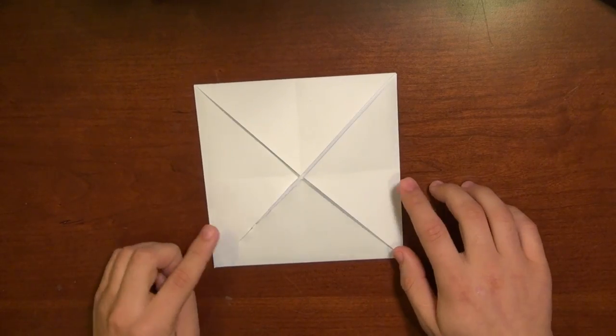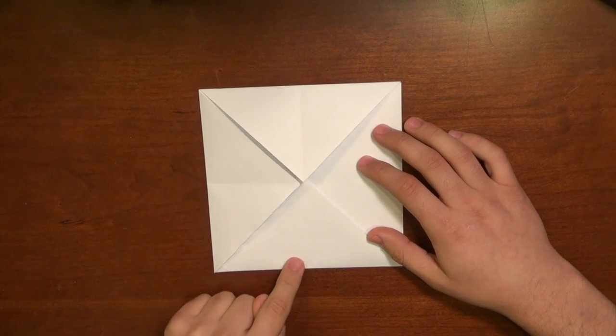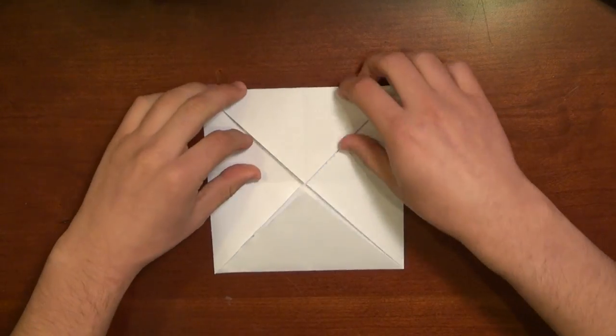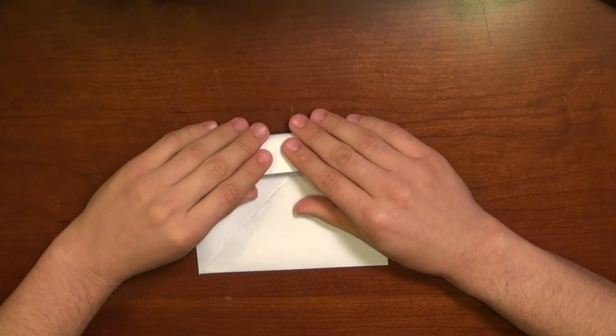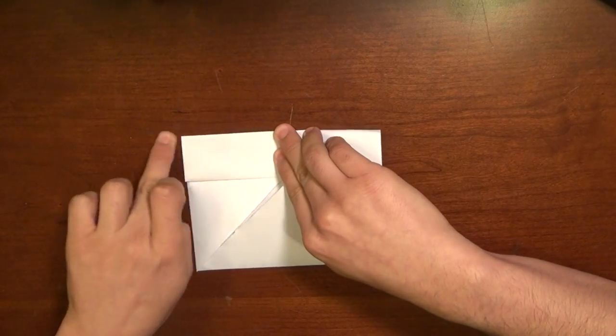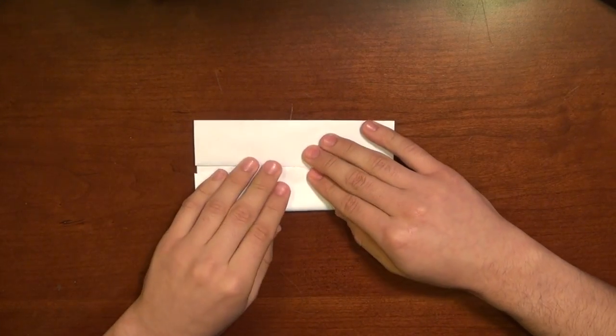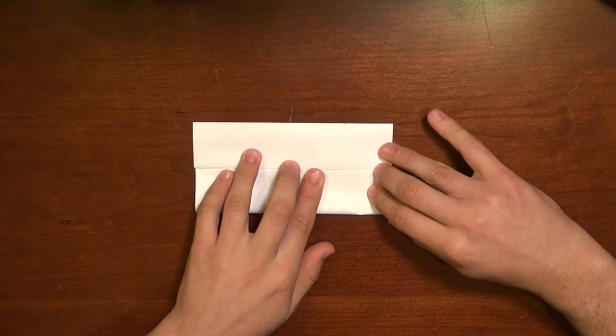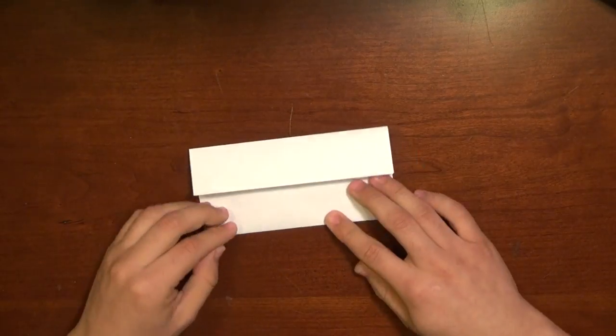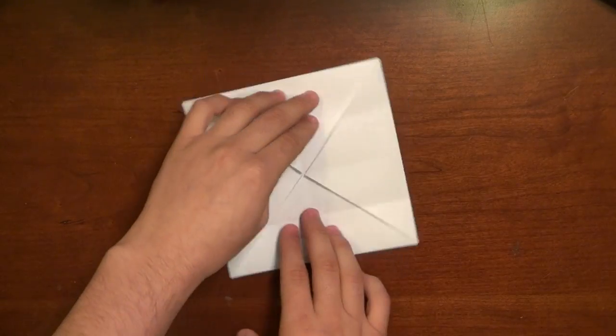So now you should have something that looks like this. We're going to turn the model a little bit like that so that it looks like a box. Now I'm going to take the top edge and the bottom edge and fold them directly on this horizontal line here. Take it and fold it down. And when it's lined up, you can make a crease on the top. Do the same with the bottom edge. Fold it and meet it up with the top edge right at that middle line. Now you can open both of those edges up and turn it the other way.